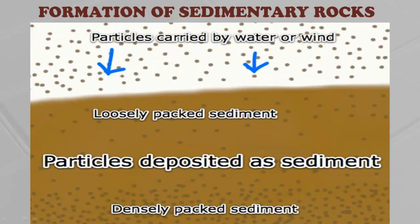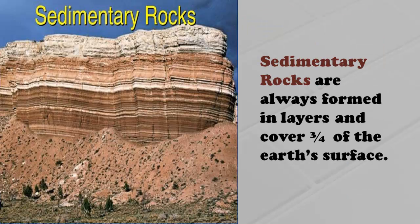Rain, wind, rivers flowing down the mountains, etc. wear away rocks and mountains. These rock particles are then carried down and deposited elsewhere. Repeated deposition presses down the lower layers and hardens them into rocks. Such rocks are called sedimentary rocks. Sedimentary rocks are always formed in layers and cover three-fourths of the Earth's surface.